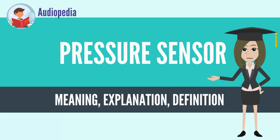Some pressure sensors are pressure switches, which turn on or off at a particular pressure. For example, a water pump can be controlled by a pressure switch so that it starts when water is released from the system, reducing the pressure in the reservoir.